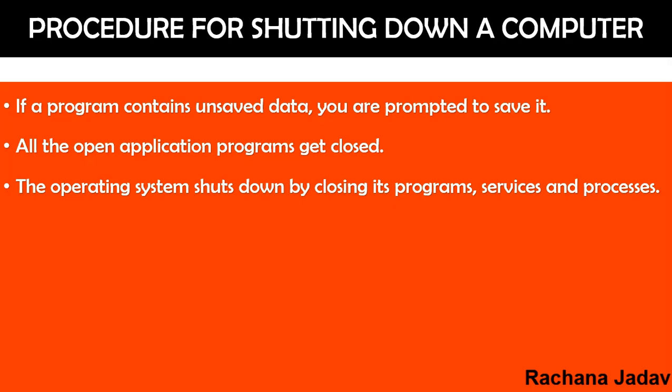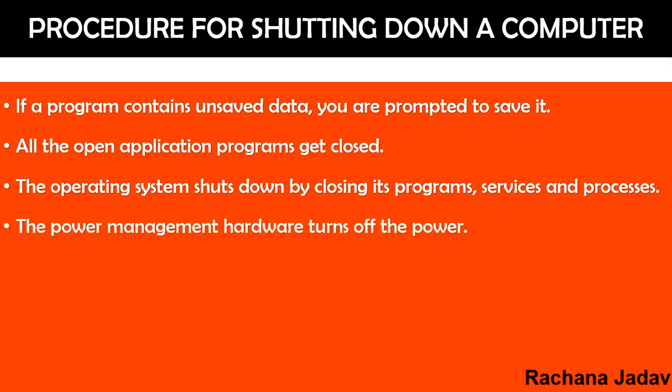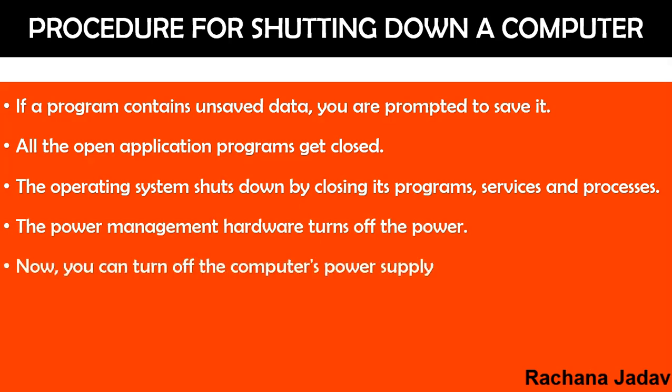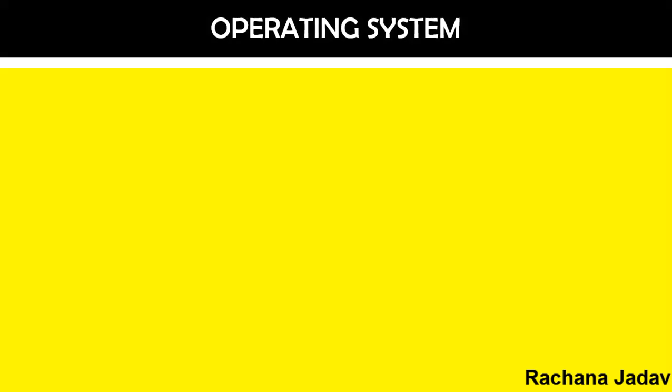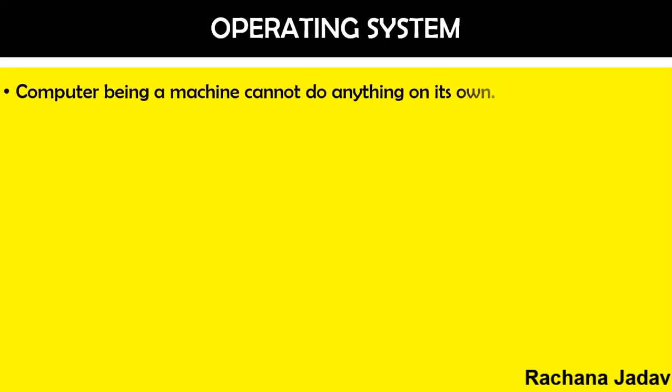At shutdown time, the system may also install updates. The power management hardware then turns off the power. This may seem like a small thing, but it is very important because many times we have seen that the computer gets damaged or doesn't work properly when we don't follow the correct shutdown process.